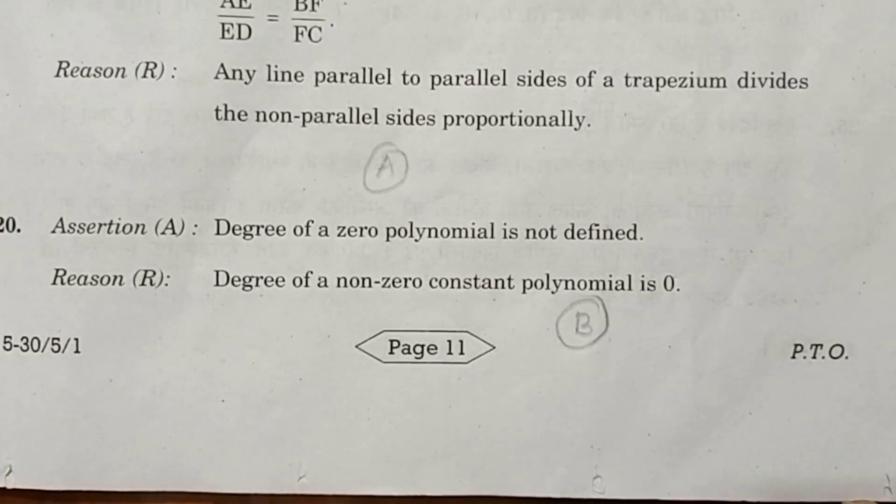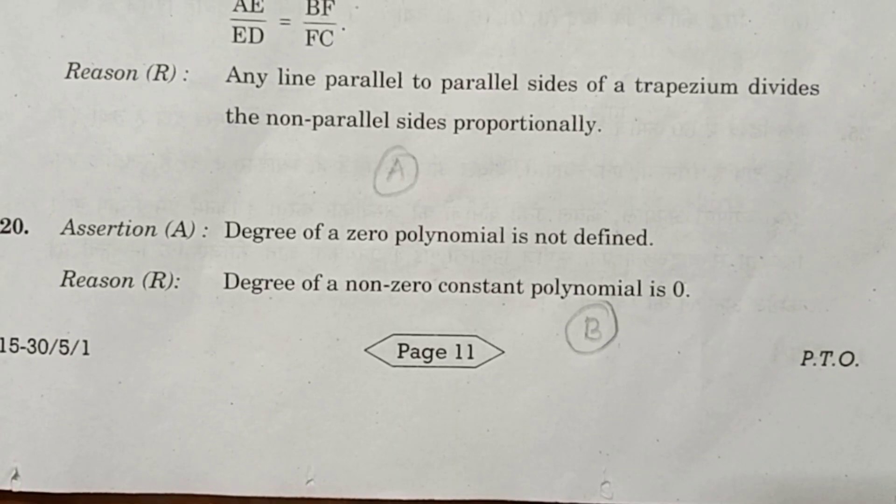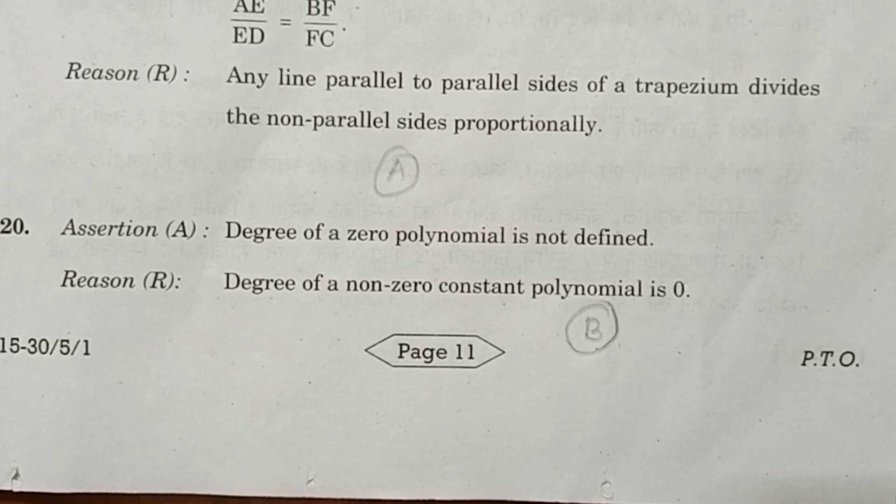Question number 20. Assertion: The degree of zero polynomial is not defined. Reason: Degree of non-zero constant polynomial is zero. The answer is B. Both assertion A and reason R are true, but the reason R is not a correct explanation of assertion A. Thank you.